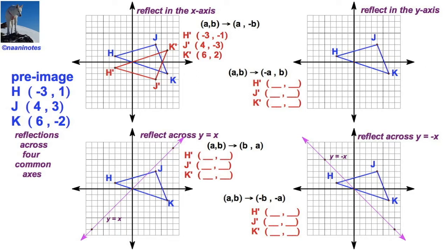Now, let's take the same pre-image, HJK, across the vertical or the y-axis. AB is going to map to opposite of A, B. Negative 3, 1. Opposite of negative 3, positive 3. And the 1 remains.